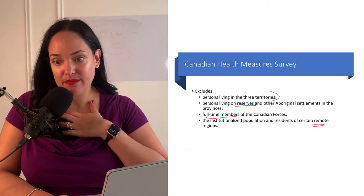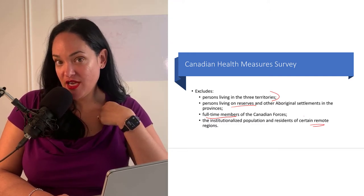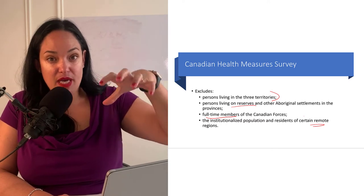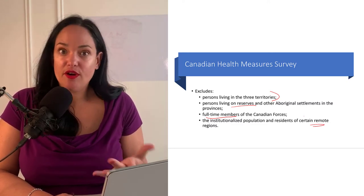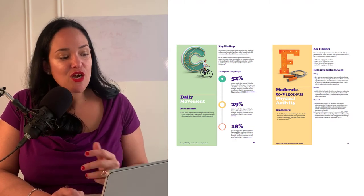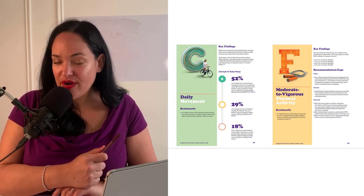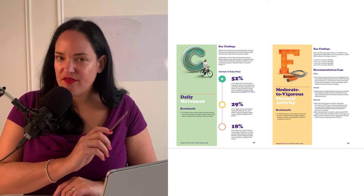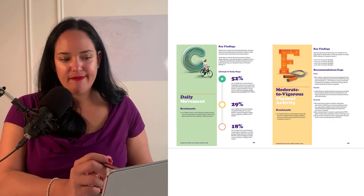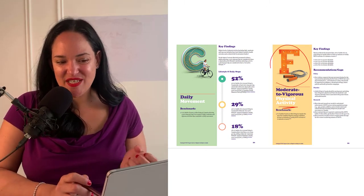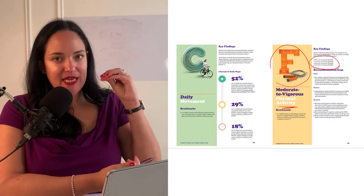I love the Canadian Health Measure Survey because when I'm making lecture slides, I often find data from this survey to support the current state of a health behavior, disease, or other factor. We've actually already seen some results from it — when we talked about physical activity in children and youth, some of that data came from the health measures survey. For example, giving a grade of F for moderate-to-vigorous physical activity and finding that less than 20% of people are active — that is measured data from the Canadian Health Measure Survey.